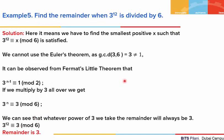The last question is: find the remainder when 3 to the power 12 is divided by 6. This means we have to find the smallest positive x such that 3 to the power 12 is congruent to x mod 6. We cannot use Euler's theorem here, as the GCD of 3 and 6 is 3, not 1. So instead, we use Fermat's Little Theorem with modulus 2. From Fermat's Little Theorem, 3 to the power n minus 1 is congruent to 1 mod 2. Multiplying by 3 throughout, we get 3 to the power n is congruent to 3 mod 6.